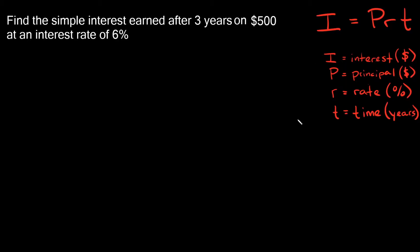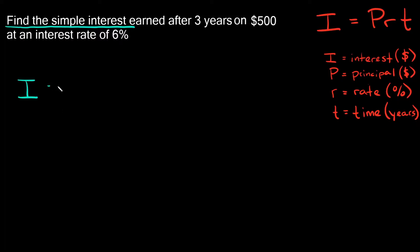Now that you know what these stand for, let's jump into this first example. It says: find the simple interest earned after three years on $500 at an interest rate of six percent. So we don't know what the simple interest is, so we're looking for I. Remember, I is equal to PRT.